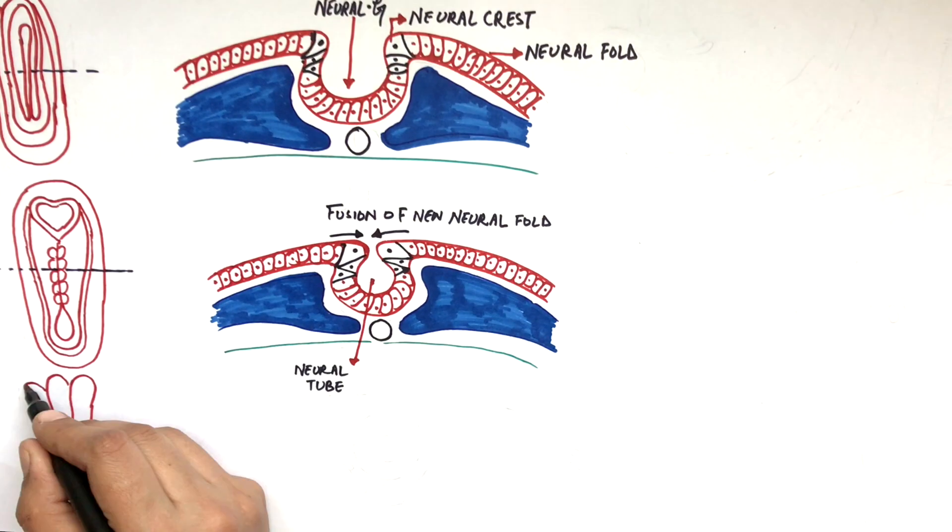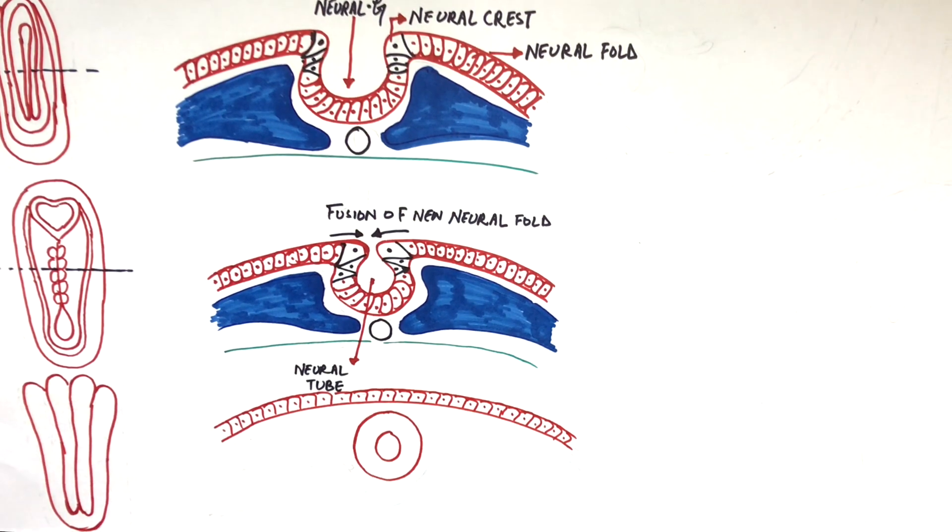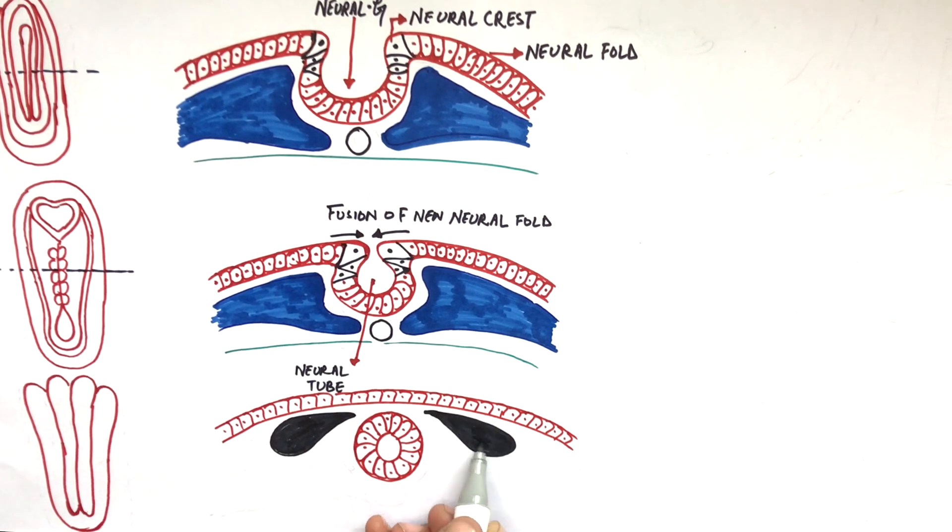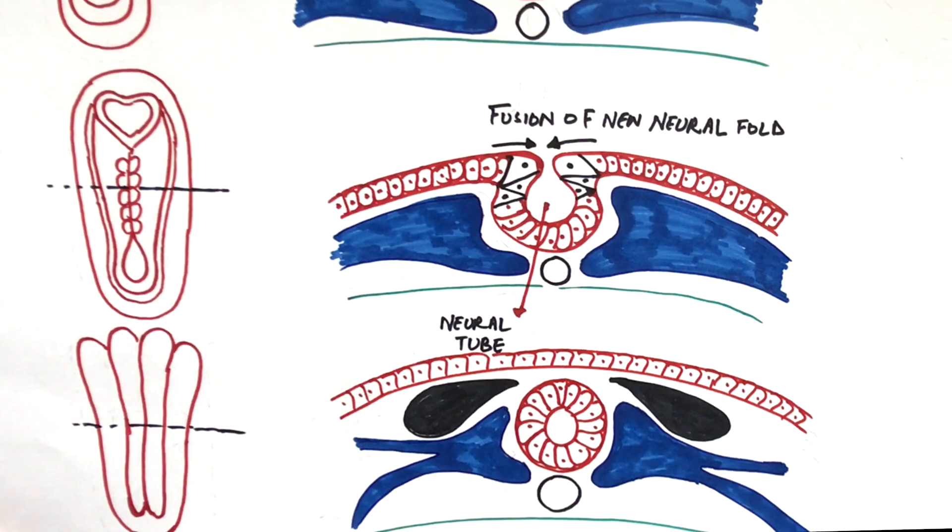At the end of this neurulation process which started at the third week, the ectoderm will be seen covering the neural tube, the neural crest cells, the much enlarged mesoderm, and the underlying endoderm. This makes sense in a way that the ectoderm will become the future skin of the baby.